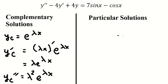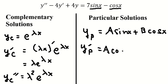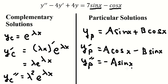Now we go to the particular solution. So we have yp. Since the right-hand side contains sin(x) and cos(x), we assume yp equals A·sin(x) plus B·cos(x). We then take the first derivative: the derivative of sin(x) gives cos(x), and the derivative of cos(x) gives negative sin(x). Now going to the second derivative, we get negative sin(x) for the A term and negative cos(x) for the B term.